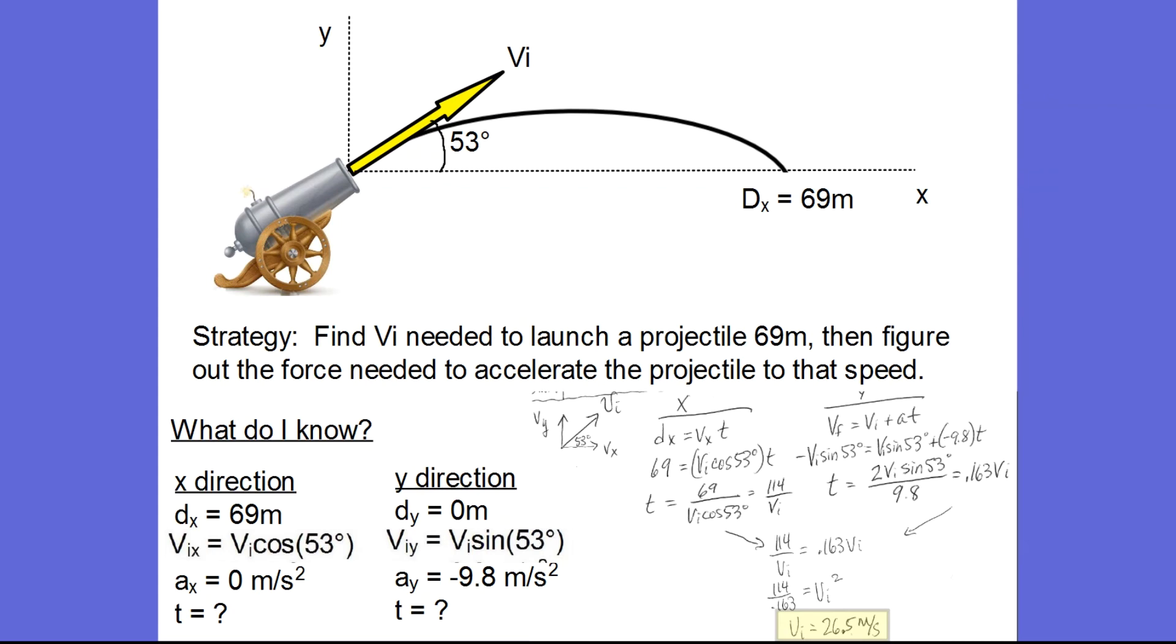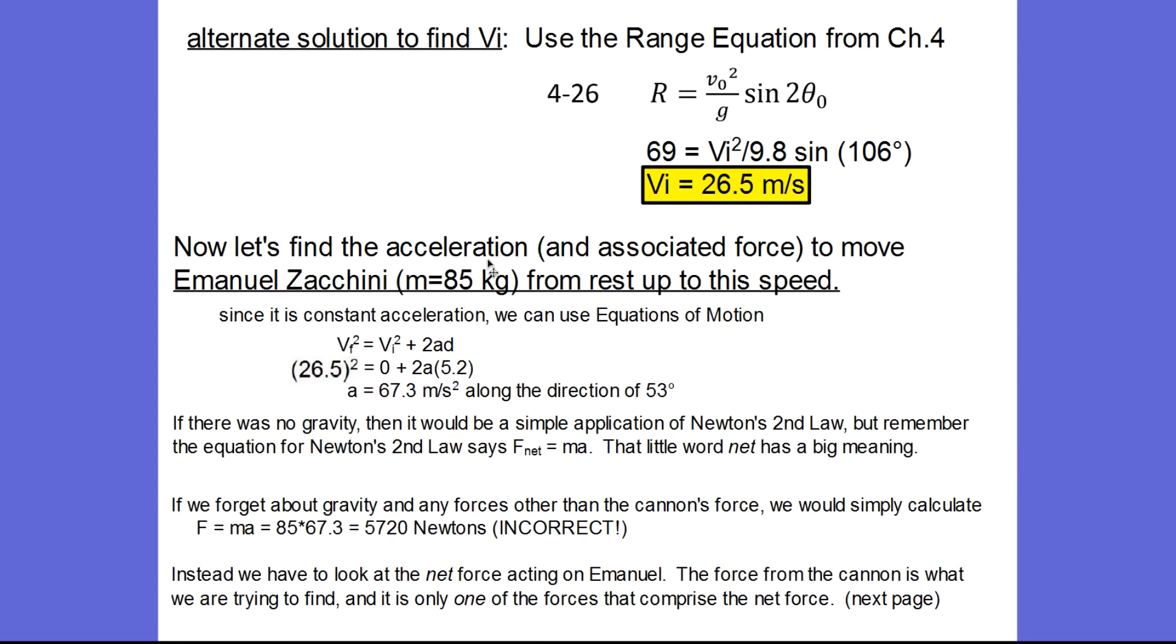Okay, so now we know our initial velocity. Now let's find the acceleration needed to get Emmanuel up to the speed and of course, once we know the acceleration, we can figure out the force needed to do that because we know his mass. Now the acceleration, they told us it's constant acceleration so we can use equations of motion. So here's the equation I'll use. I know that I need to go from rest up to 26.5 meters per second in a distance of 5.2 meters. That was given to us as the length of the cannon through which he is being accelerated. So when we solve for the acceleration, we see that it is 67.3 meters per second squared.